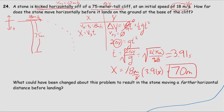What could have been changed to result in the stone moving farther horizontally? Two things: you could have increased the launch velocity, which would directly increase the distance; or you could have increased the launch height, which would increase the time of flight, and since horizontal position equals velocity times time, that also increases horizontal distance. Those are your sample problems for vectors and horizontal projectiles this week.